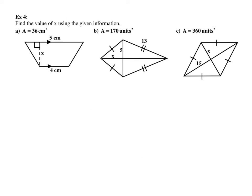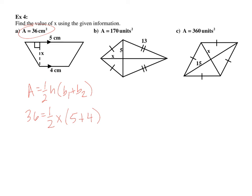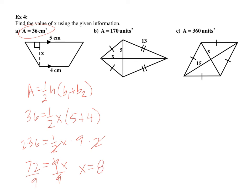Find the value of x using the given information. For part A, we have a trapezoid with area 36. The height is x, base 1 is 5, and base 2 is 4. So 36 equals half of x times 9. Multiply both sides by 2 to get 72 equals 9x, then divide by 9, and x equals 8.